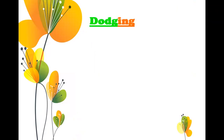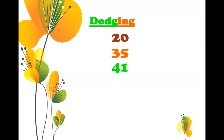Now dodging. Write 20. We have done it so many times, I hope you have learned how to do it. Dodging 35 — you have to write 35. Whatever number ma'am is going to tell you, you have to write that. 41.